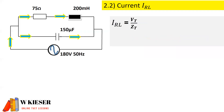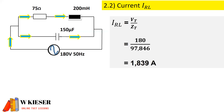In the second part of question 2 we need to determine the current flowing inside of the inductive branch. So therefore it's V total divided by the impedance. The voltage total is 180 volts and the impedance is 97.846 ohms. Therefore the current flowing in the inductive branch is 1.839 amps.